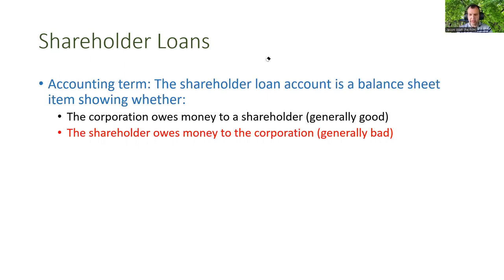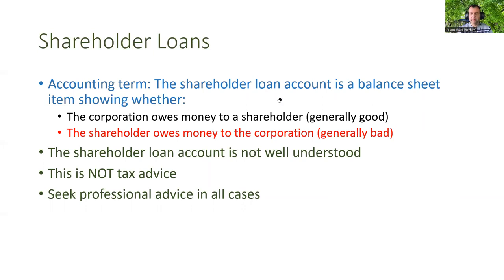We're going to see an example of this momentarily, or whether the shareholder owes money to the corporation, which is generally a bad thing, although there are some exceptions to that. The shareholder loan account is not well understood, and part of the issue is that we don't explain whether the corporation owes money to the shareholder or vice versa — we just say there's a shareholder loan balance, which doesn't tell nearly enough of the story.